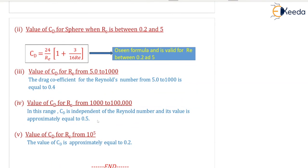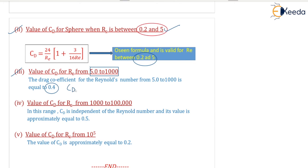Now we look at the value of Cd for a sphere as the Reynolds number range changes. For Re from 0 to 0.2, Cd = 24/Re as we have seen. For Re from 0.2 to 5, Cd = (24/Re) × (1 + 3/16 × Re); this is Oseen's formula, valid for Reynolds number 0.2 to 5. For Re from 5 to 1000, the drag coefficient Cd equals 0.4.